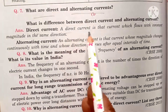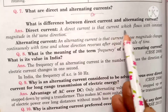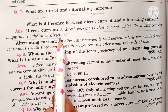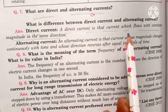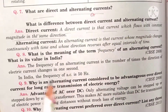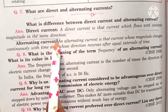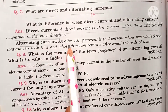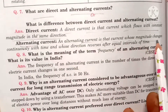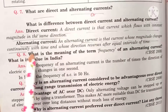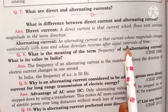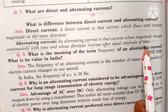Direct current is that current which flows with constant magnitude in the same direction, as we have seen in the graph. Alternating current is that current whose magnitude changes continuously with time and whose direction is reversed after equal intervals of time.